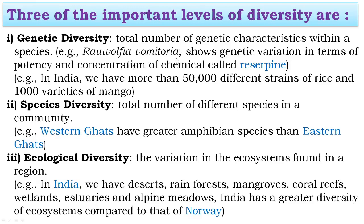The first level is genetic diversity — the total number of genetic characteristics within a species. Within a single species there are differences among individuals. For example, Rauwolfia vomitoria, a plant species growing in the Himalayan ranges, shows genetic variation among its individuals in terms of the potency and concentration of the chemical reserpine.